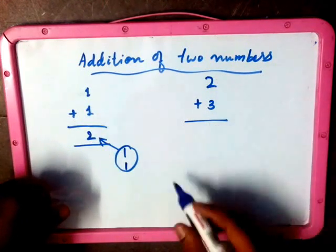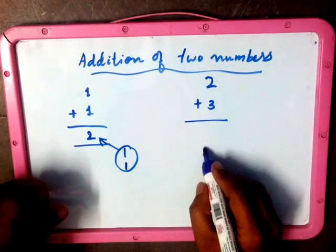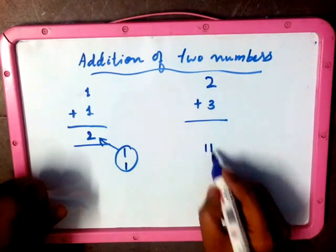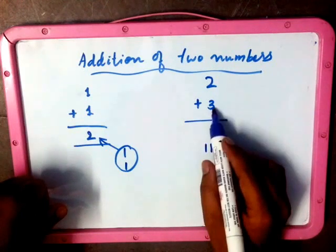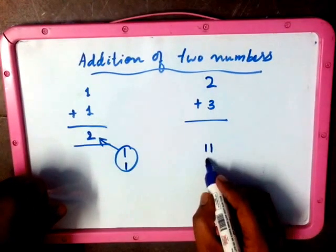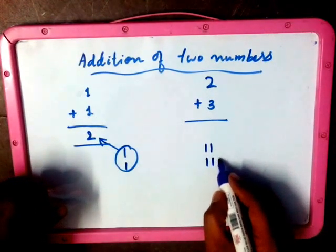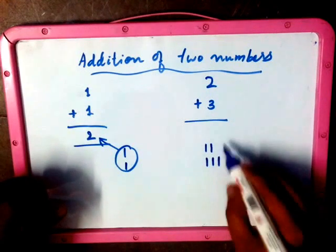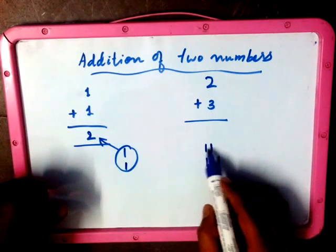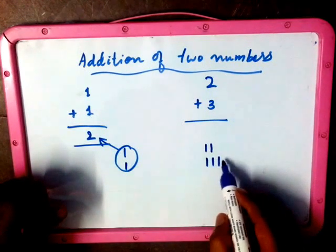Taking another example, that is two plus three. So for two plus three, draw two lines - one, two - and another number is three, draw three lines - one, two, and three. And count both the lines: one, two, three, four, five. The total number of lines is five.